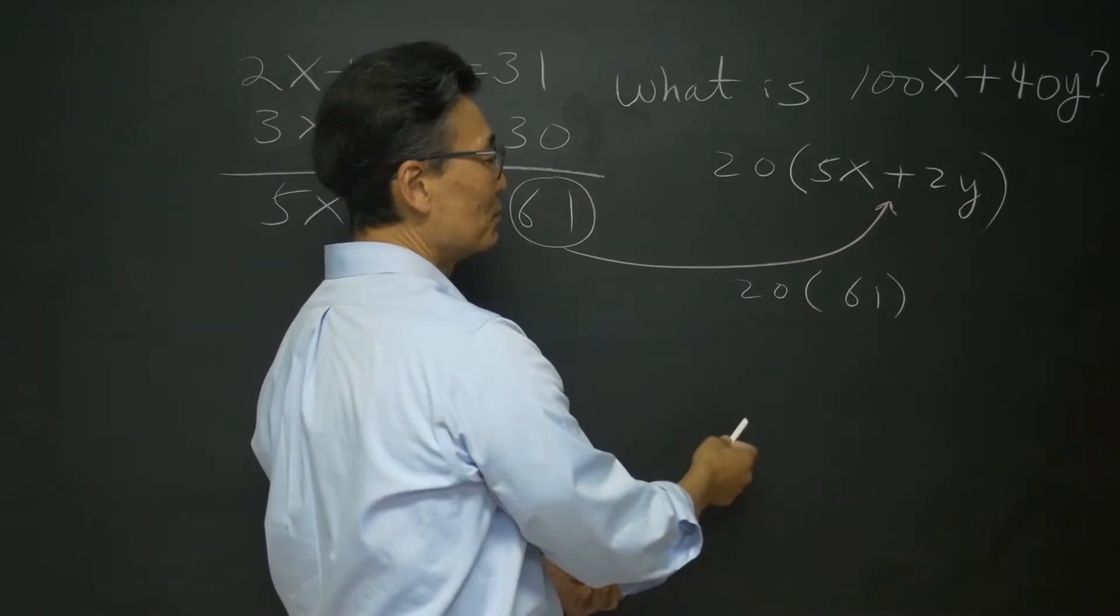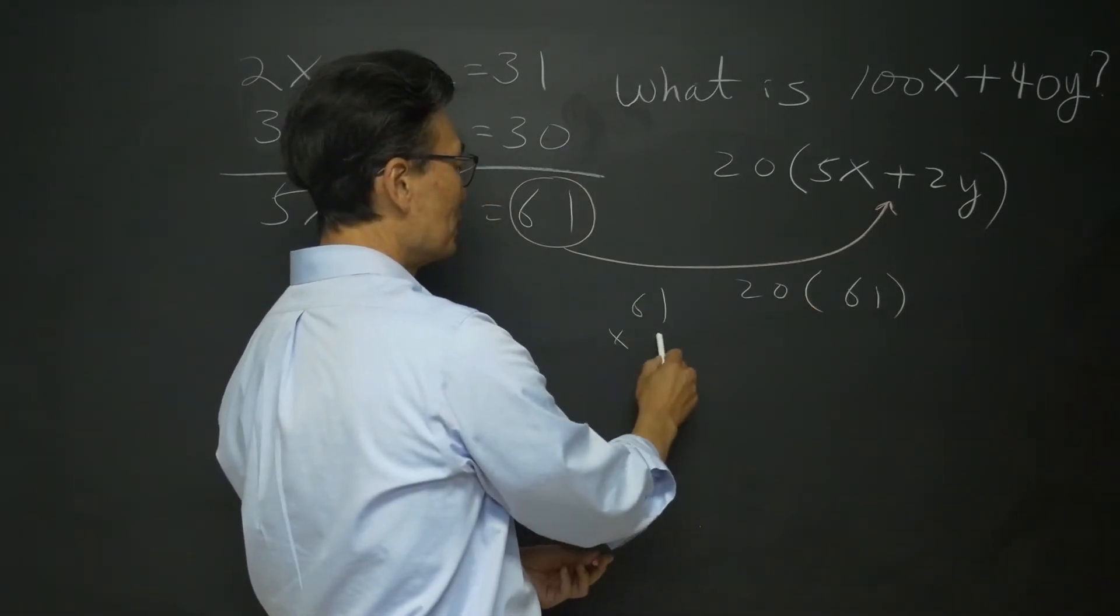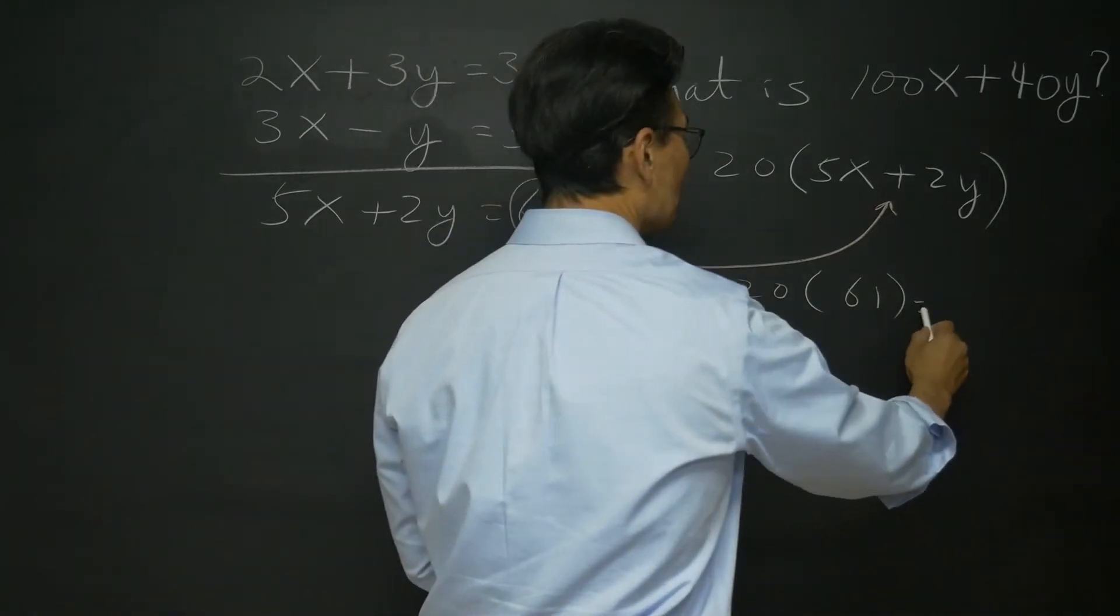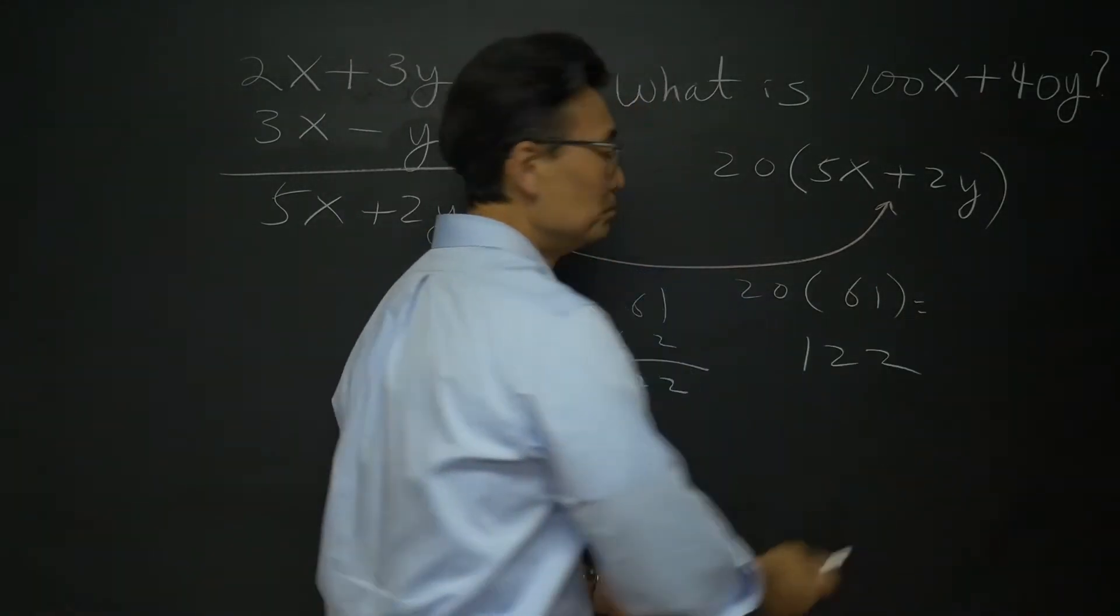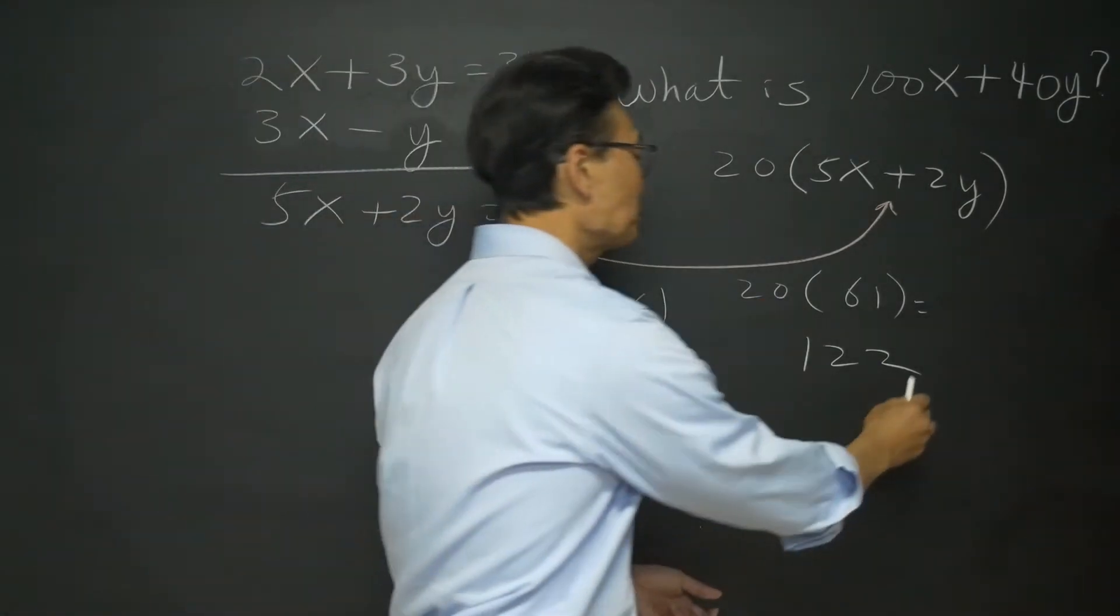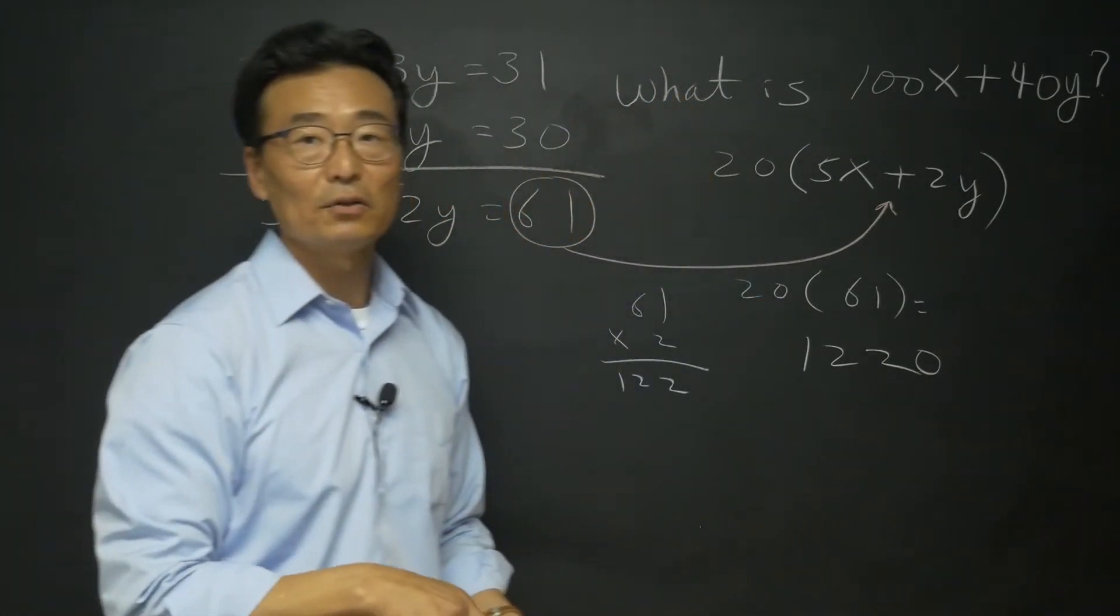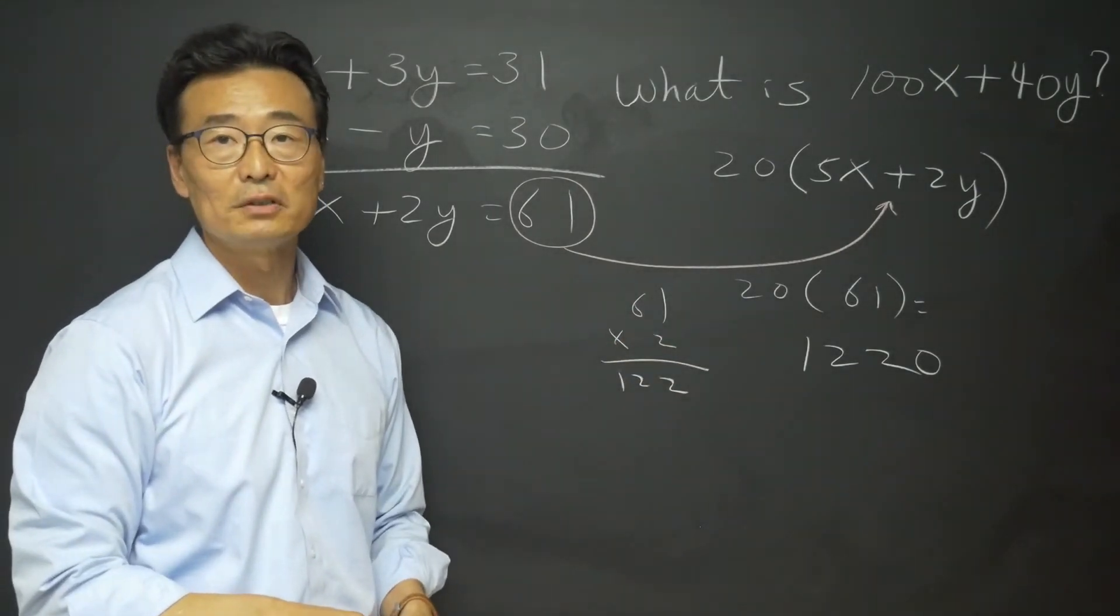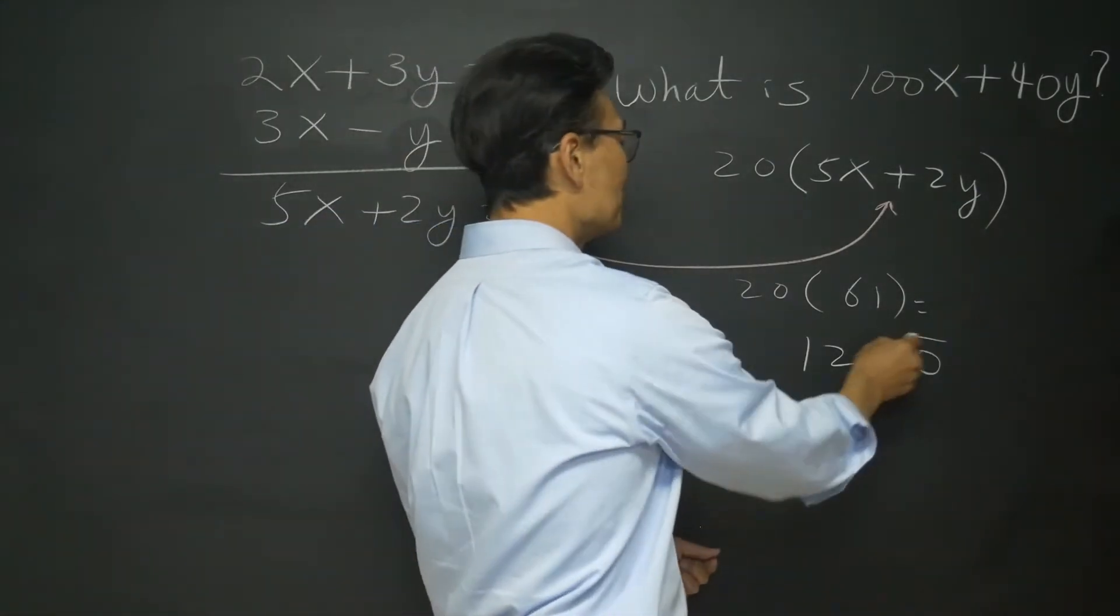And to take 20 times 61, you would do 61 times 2, 2 and 12, so this would equal to 122. Only thing is, you just got to go ahead and add the 0. Remember, this is a no calculator section, so knowing how to do these is important as well.